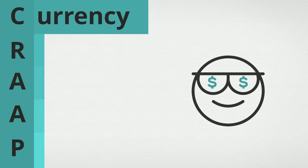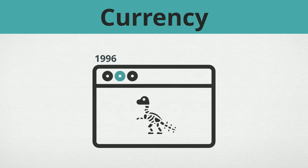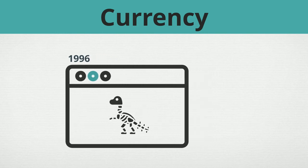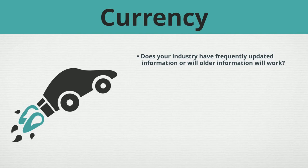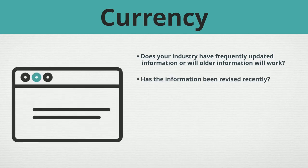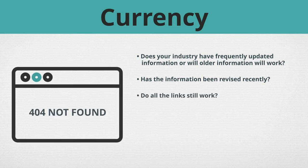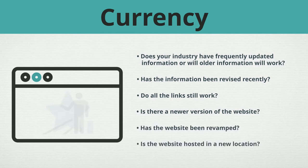Currency. Not that kind of currency. In this case, currency refers to how timely the information is. After all, would you rather get your health news from a website that hasn't been updated since 1996, or would you rather get your information from a source that's a bit more recent? How do you check for currency? Ask yourself: are you in a fast-paced industry where the latest cutting-edge information is always being updated, or will older sources work just as well? Has the information been revised recently? If it's a website, do all of the links still work? Is there a newer version of the website? Has it been revamped, or is it hosted in a new location?